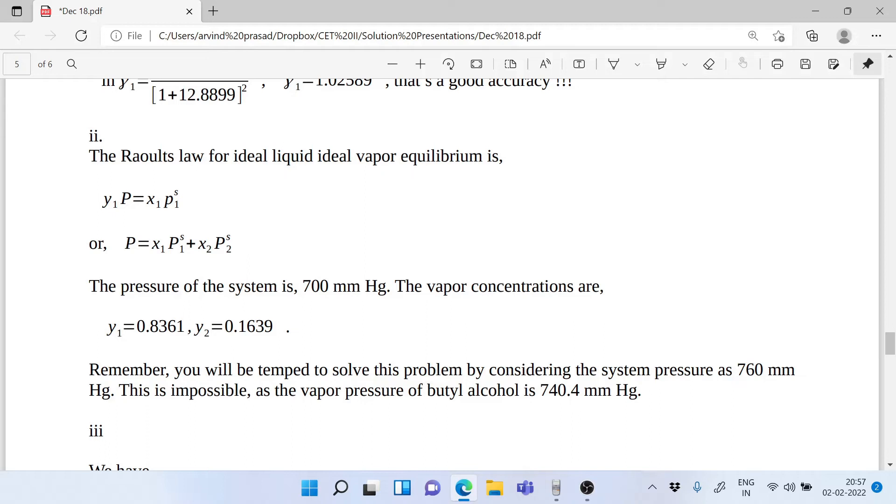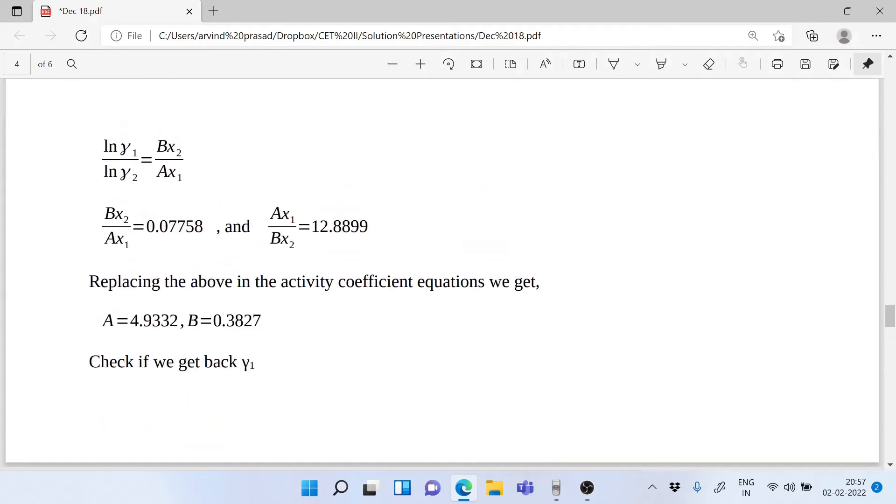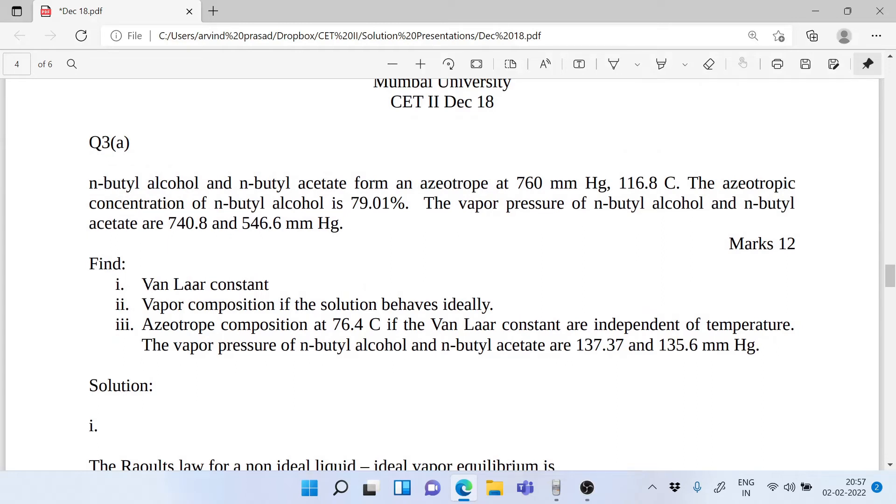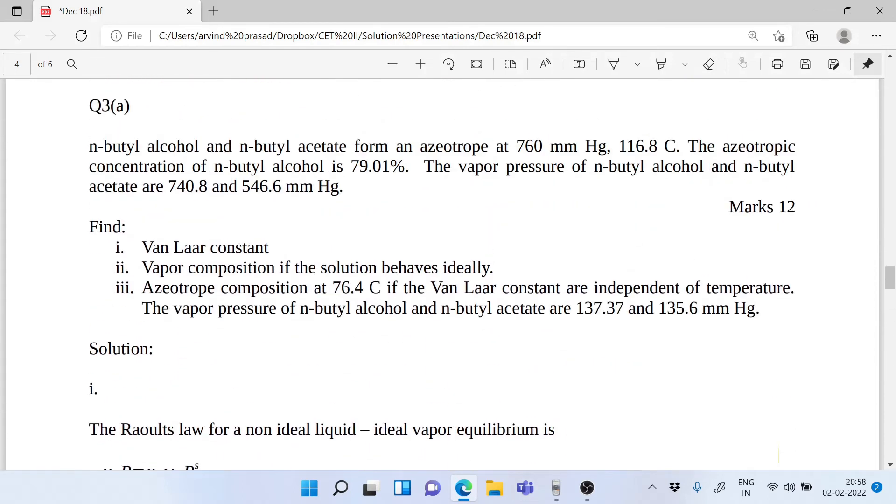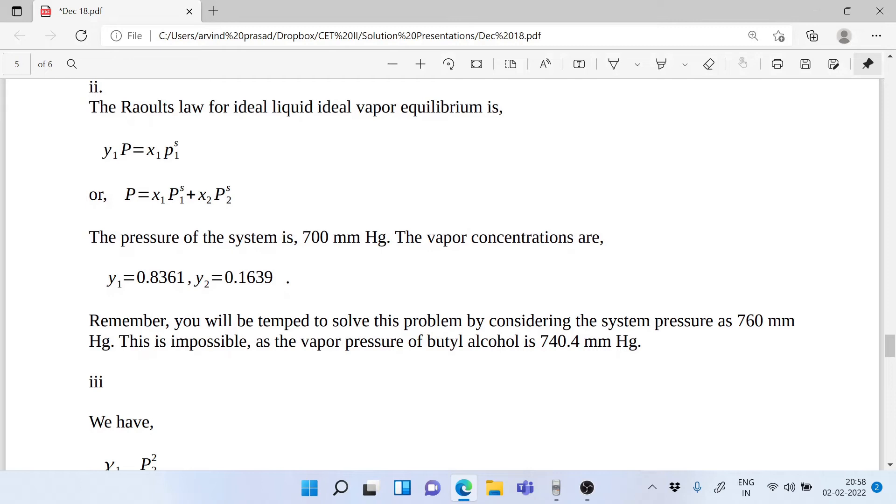From this we can put this 700 mmHg in this equation and we can get back y₁ and y₂. Remember, you will be tempted to solve this problem by considering the system pressure as 760 mmHg. This is impossible. Why? Because if you see the vapor pressures here are 740.8 and 546, so any ideal mixture has to have a pressure in between these two extremes. Since this is a non-ideal mixture you have a pressure which is 760 mmHg. For ideal system you will have to first calculate the pressure because it lies somewhere in between, and then you have to go with your calculation.